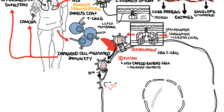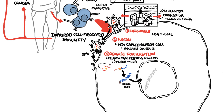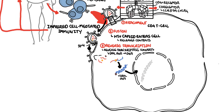The third step is reverse transcription. Here, HIV uses its reverse transcriptase enzyme to convert the RNA it contains into proviral DNA inside the cell — the double-stranded viral DNA. Once this is done, the next step is integration. The HIV's integrase enzyme attaches itself to the end of the proviral DNA strands and carries the viral DNA into the cell nucleus.